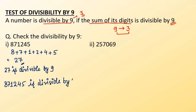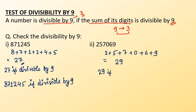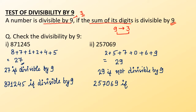Now for the next number 2,57,069: 2+5+7+0+6+9 = 29. Since 29 is not divisible by 9, the number 2,57,069 is also not divisible by 9.